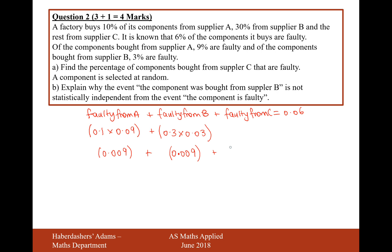So then we have the amount of faulty products from C. We know that C contributes 60% of the parts, so we'll do 0.6 times x, and that gives us 0.06. Moving the two 0.009s onto the other side gives us 0.042, then divide by 0.6, and that gives us 0.07.